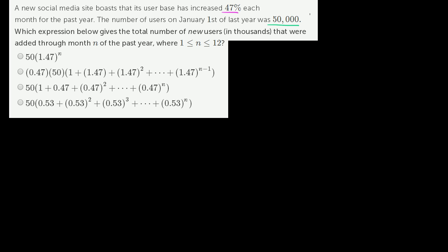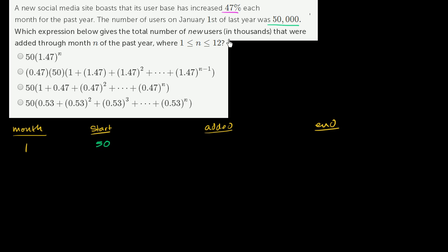To tackle it, I'm going to make a little table with columns for month, starting users, users added, and users at the end of the month. In month one, which is January, we started with 50,000 users. In thousands, that's 50. We added 47% of 50,000, so 50 times 0.47.